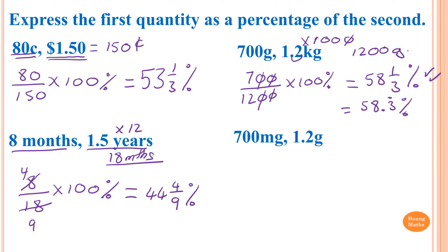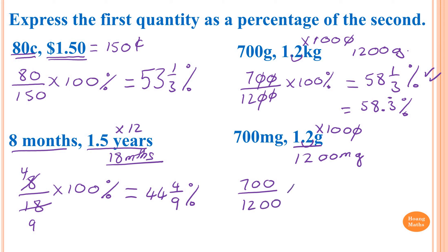700 milligrams and 1.2 grams. Convert to milligrams: 1.2 times 1000 gives 1200 milligrams. So it's 700 divided by 1200 times 100 — exactly the same numbers as above, so the answer is also 58 and one-third percent. Thank you so much for watching.